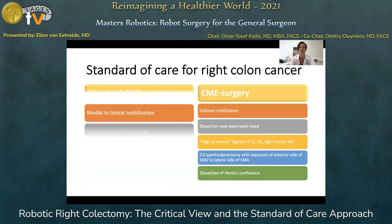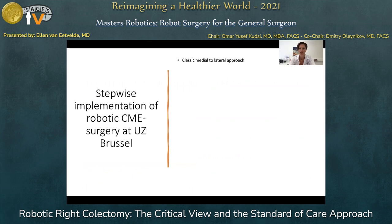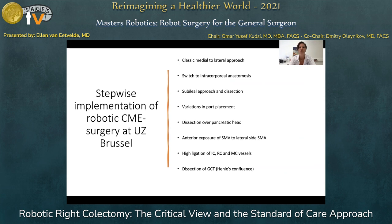So how do you implement robotic CME surgery? Well, you divide it into steps. First, you don't change anything — you only change the device. You start exploring robotic surgery with the technique you are used to in laparoscopic surgery. You then switch to the intracorporeal anastomosis, start playing with variations in port placement and the sub-ileal approach, and then you start the central lymph node dissection and high ligation of contributing vessels.